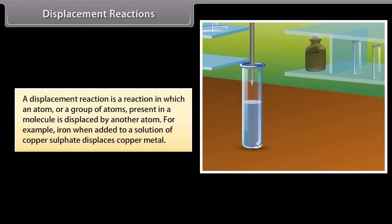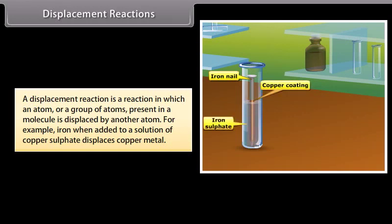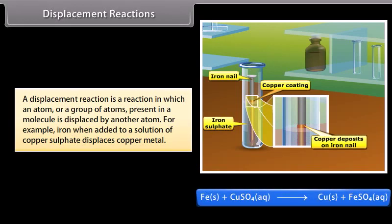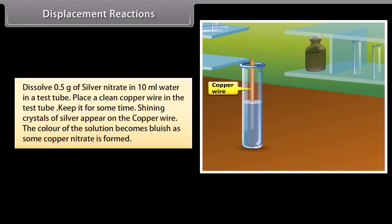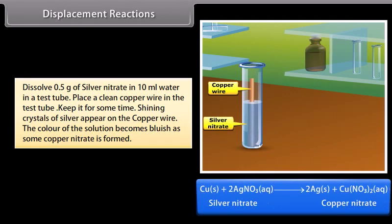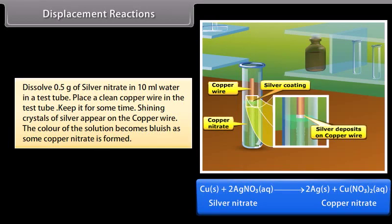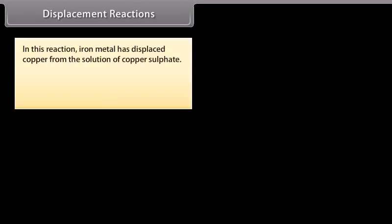Displacement reactions. A displacement reaction is one in which an atom or a group of atoms present in a molecule is displaced by another atom. For example, iron when added to a solution of copper sulfate displaces copper metal. Activity: dissolve 0.5 gram of silver nitrate in 10 ml water in a test tube, place a clean copper wire in the test tube, and keep it for some time — shining crystals of silver appear on the copper wire, and the solution becomes bluish as copper nitrate is formed.